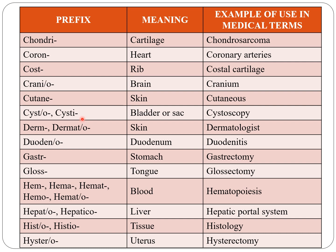Cysto or cysti indicates bladder or sac. Dermo or dermato indicates skin. Gastro indicates stomach — gastro or ventro both indicate stomach. Glosso indicates tongue.